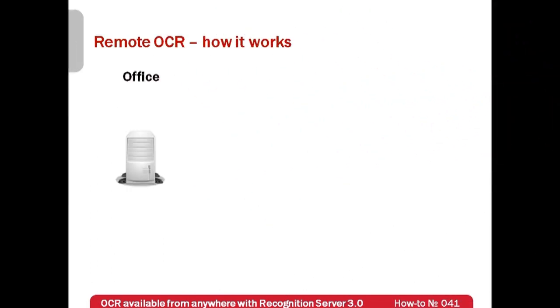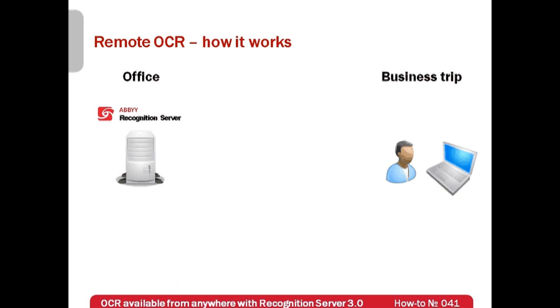Let's see how it works. This is the company's office with a server connected to the internet. ABBY Recognition Server is installed on this computer. There is an employee on a business trip, or maybe even on his holidays, with his personal laptop or maybe using a client's computer. It is necessary to sign a new sales contract. Using any computer connected to the internet, our salesperson logs in to his email and finds a scan of a similar contract which he previously signed.